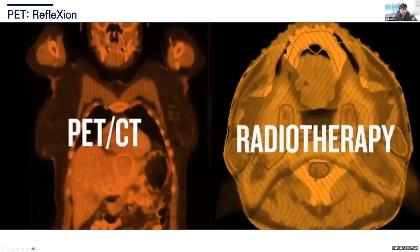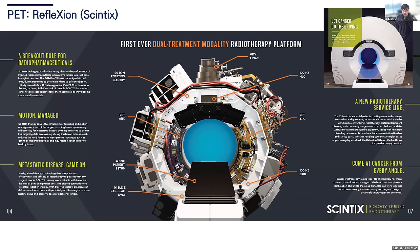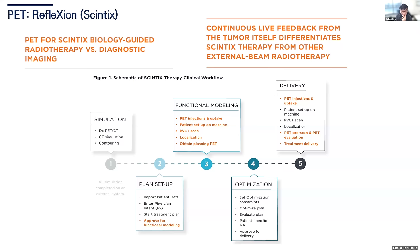Finally, there is another X-ray system using a PET detector — the RefleXion system. This is not available in Asia at the moment; I believe they are trying to get FDA clearance and have already started treatment in the US. The system has a 6 MV linac and 16-slice fan beam CT. They can get in-beam PET imaging during treatment, allowing higher dose delivery to the tumor based on that imaging.